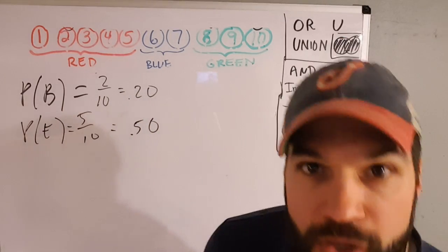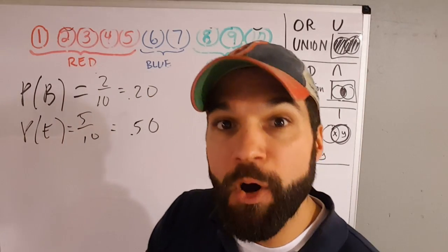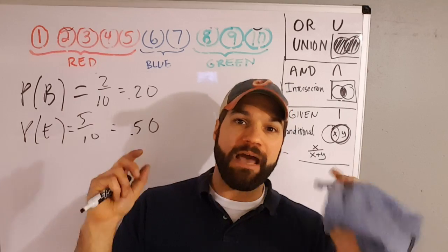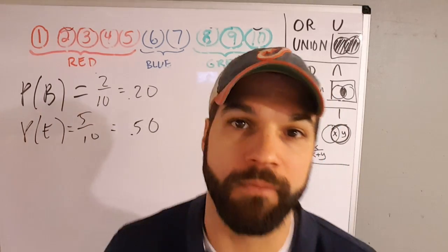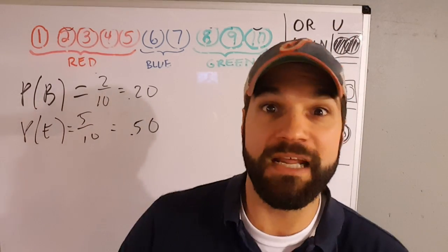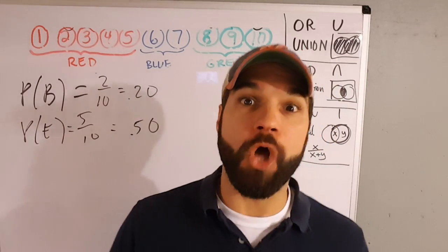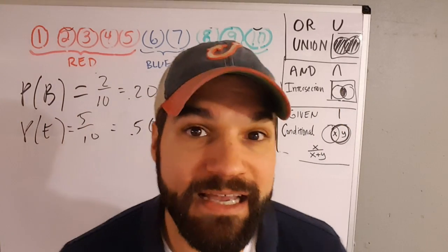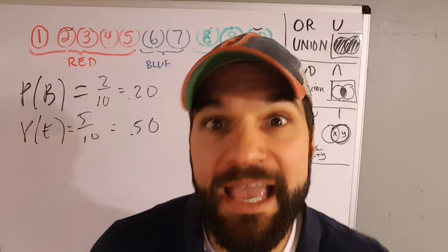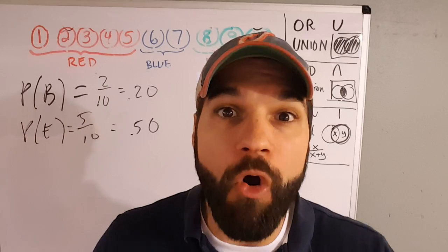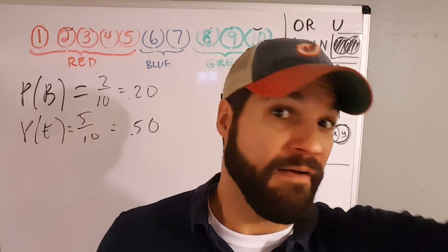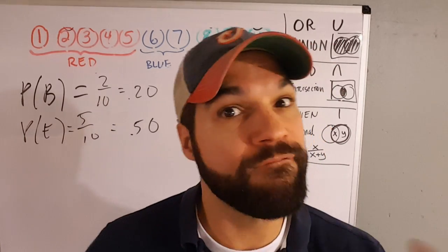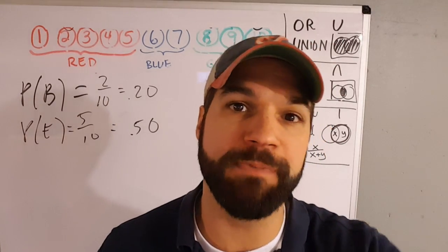Now the question is: what's the likelihood I reach in and pull out one that's both blue and even? The word 'and' means you only count if both conditions are true. Remember 'or' meant this or that or both — 'and' is only the both, only the intersection. For example, stand up if you're a female and wearing sneakers. Only people who are both female and wearing sneakers can stand up. Both must be true at the same time.